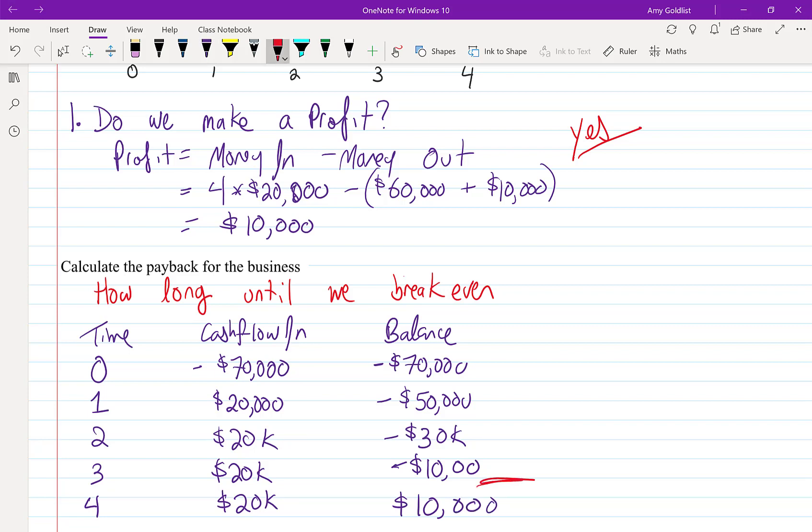We've somehow made it to positive. So over here we're negative, we're in a loss situation, and over here we're in a profit situation. So what we're going to say is our payback is 3.5 years.